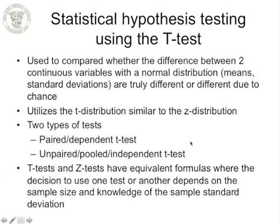Hypothesis testing using the T-test compares the difference between two continuous variables with normal distributions — those that have means and standard deviations — to determine whether these two distributions are truly different or different due to chance. The T-distribution is similar to the Z-distribution. There are two types of T-tests: the paired or dependent T-test, and the unpaired, pooled, or independent T-test. The decision to use a T-test or Z-test depends on sample size and knowledge of the standard deviation. T-tests deal with small samples where standard deviation is unknown; Z-tests deal with populations where standard deviation is often known.